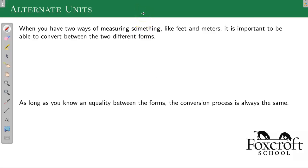There's a lot of different times when you have two different ways of measuring something. Like you might be in physics class and you can measure distance in feet or meters, but it's important we go between the two values. Maybe your formula uses meters but your ruler uses feet. You have to be able to convert between the two. And as long as you know how these things are related, the conversion process is always the exact same. It doesn't matter if we're going from feet to meters, radians to degrees, or miles to kilometers.